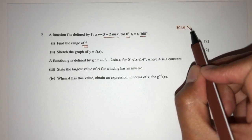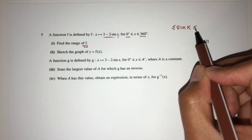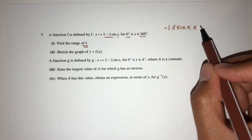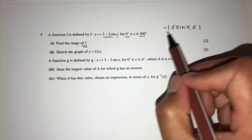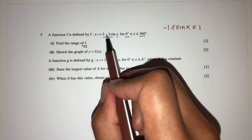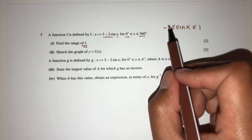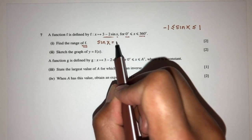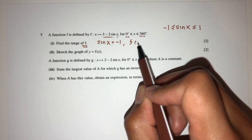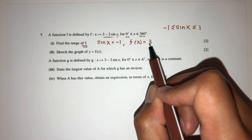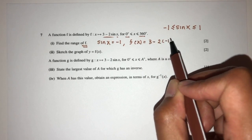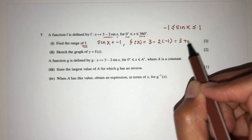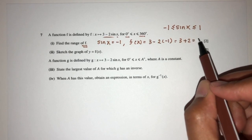Now we know sin x is only between the values of minus 1 and 1. So let's take the minimum value, so 3 minus minus 1. So when sin x is equal to minus 1, we have f of x will be 3 minus 2 times minus 1. That should be 3 plus 2, and that will be 5.